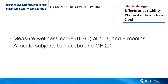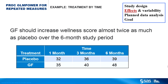As far as study design is concerned, the outcome you will measure is a wellness score ranging from 0 to 60, assumed to be approximately normally distributed. You will assess wellness at 1, 3, and 6 months, so the design is a repeated measures design. You will allocate twice as many subjects to the placebo treatment as to the GF treatment. The signals are the true underlying wellness score means at each treatment-by-time combination. You conjecture that the estimated means would show GF increasing the wellness score almost twice as much as the placebo over the 6-month study period.